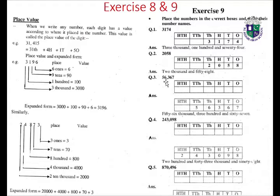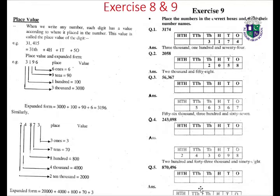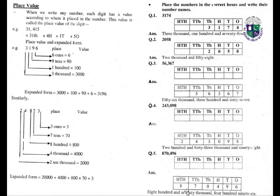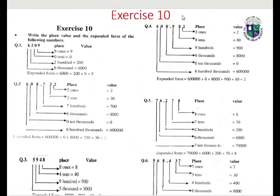2,058. 56,367. 256,367. 243. 243. 2,098. Also: 243, 2,098, and 870,496.